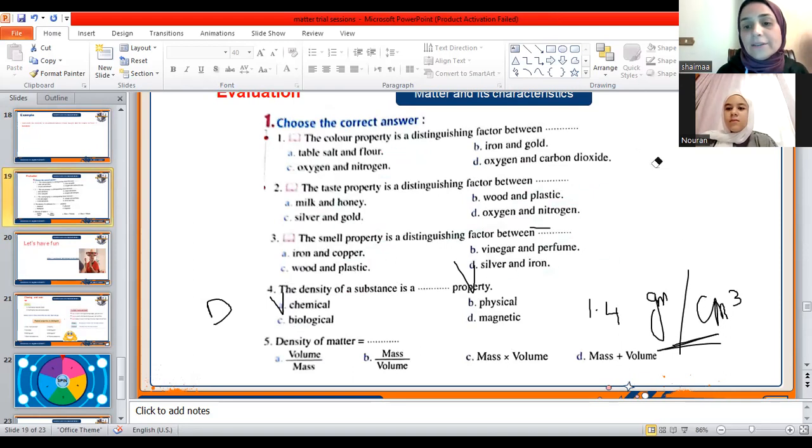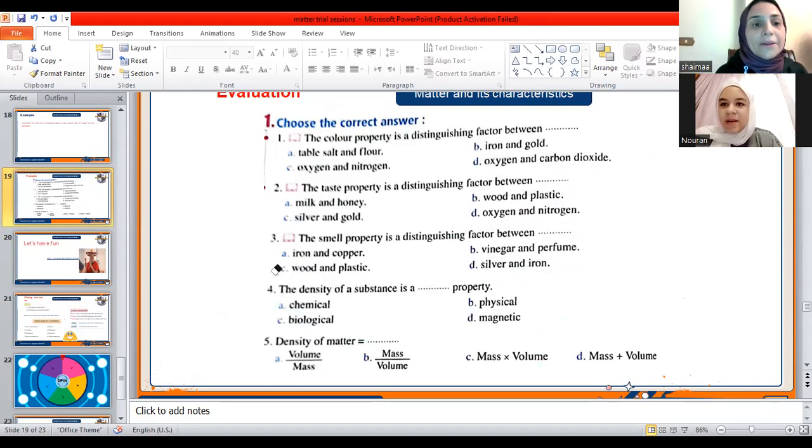Read number one and answer please. The color property is a distinguishing factor between... we can differentiate two things by color. Iron and gold. Iron and gold, okay.